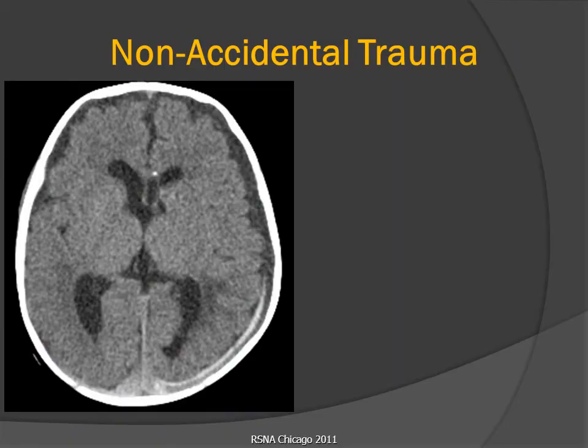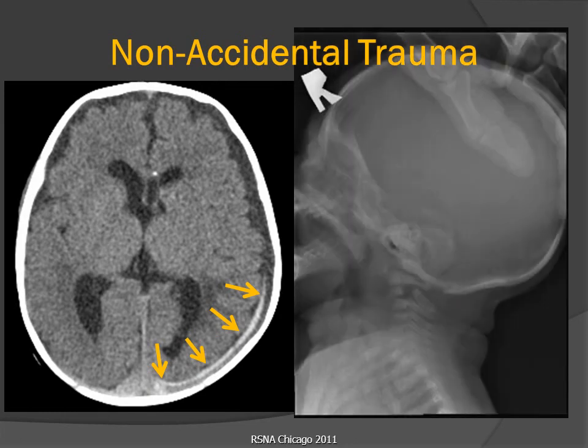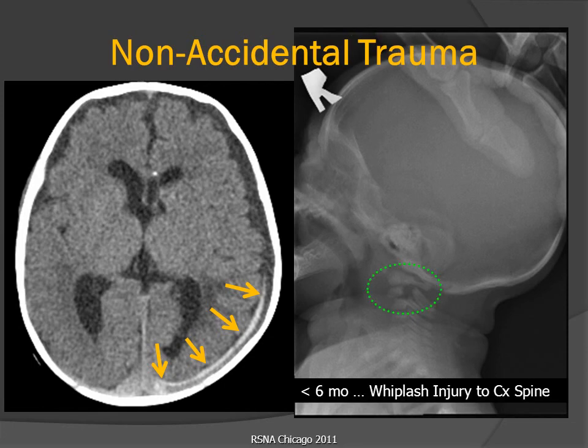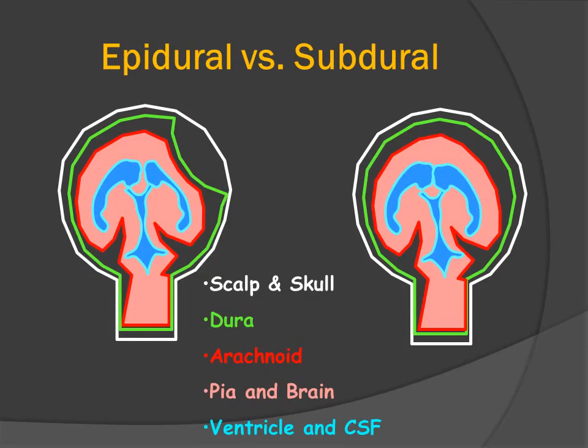This last image illustrates a child. We can see a thin layer of subdural blood overlying the occipital lobe on the patient's left side. This patient, who was under six months of age, also suffered from a whiplash injury and a fracture of the C2 vertebral body.